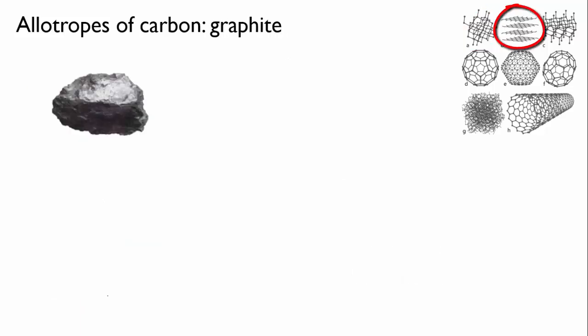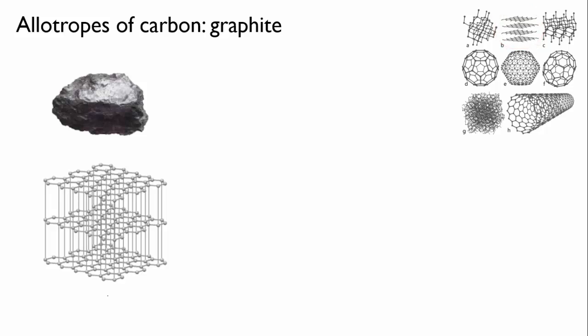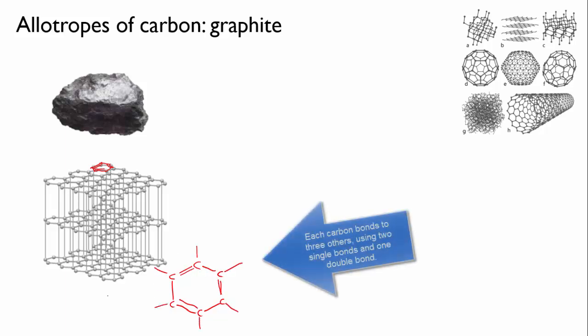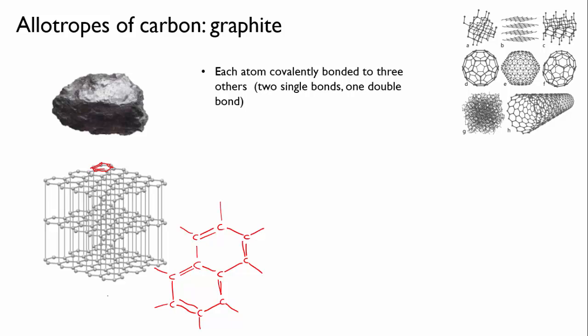Graphite is another well-known allotrope of carbon and it has a more complex structure. The bonding in graphite is a bit like the bonding in ethene. Each carbon atom bonds to three other carbon atoms using two single bonds and one double bond. The result of this is a continuous lattice of flat hexagons with alternating single and double bonds. Each lattice is a flat single sheet, only one carbon atom thick, and each layer is quite strong for its thickness because like diamond it's held together by covalent bonds.